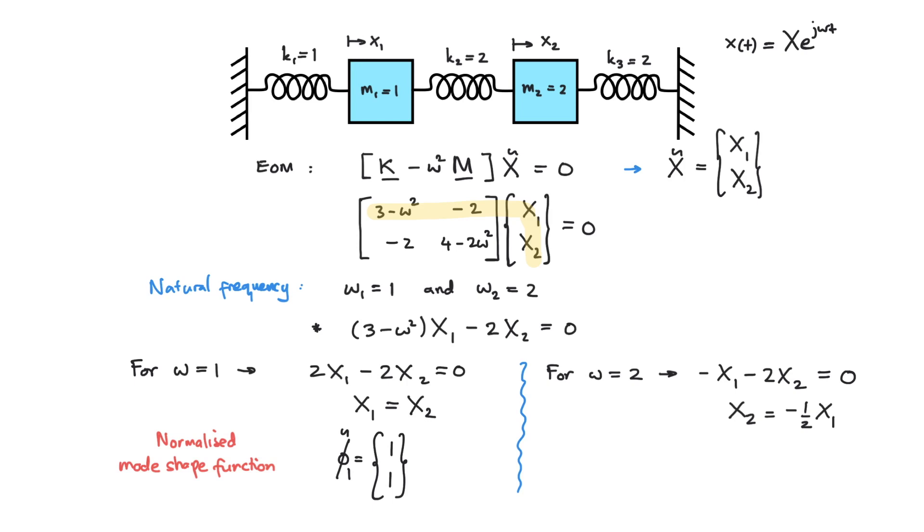So again if x1 equals to 1, then x2 equals to minus a half. Then the normalized mode shape function v2 is equals to 1 minus 0.5.